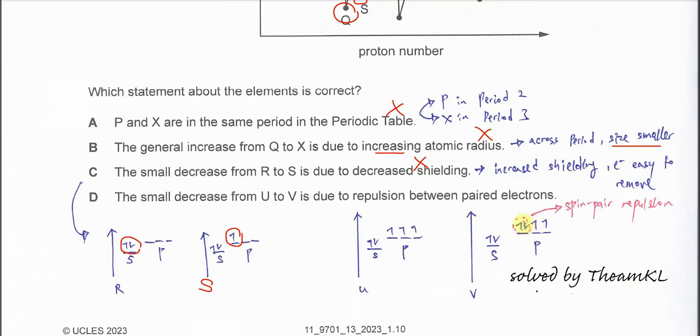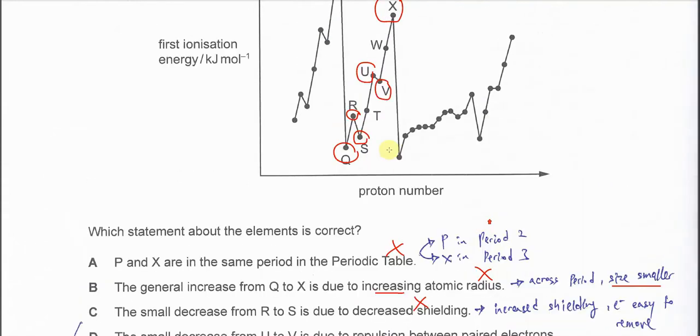And this pair of electrons has the effect we call spin pair repulsion. Because of the repulsion of the different spins, the electron here is easier to remove. So when it's easier to remove, therefore the IE decreases from here, slightly decreased.